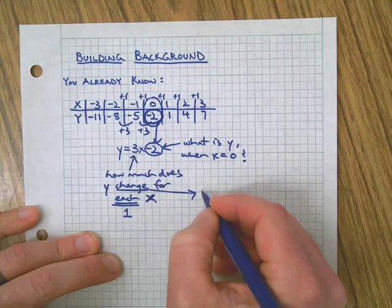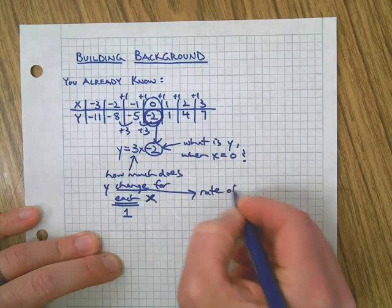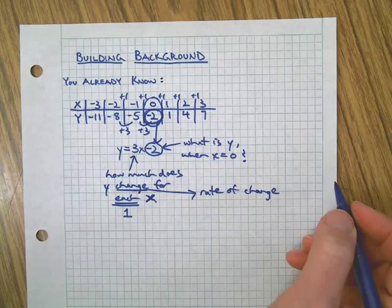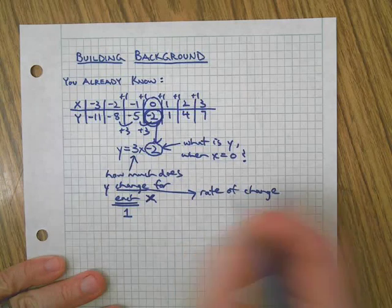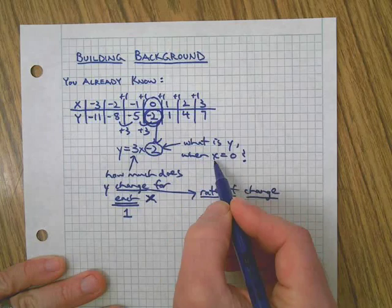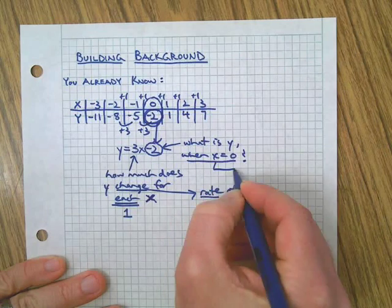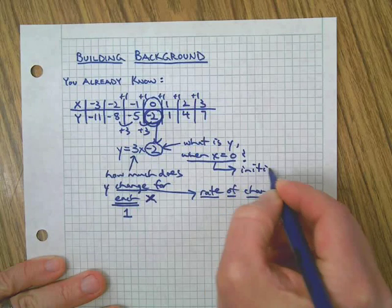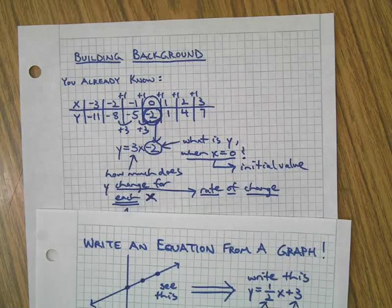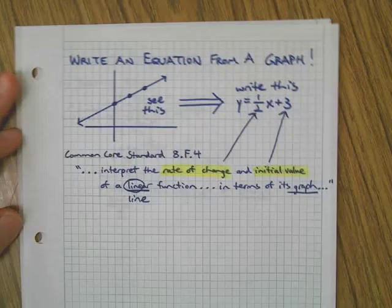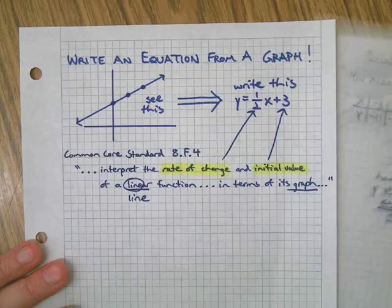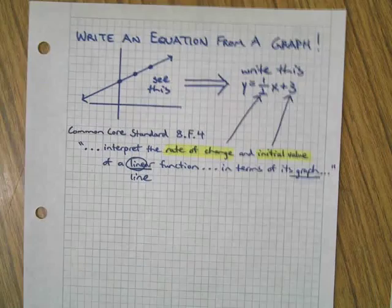We're going to start thinking of that as rate of change. And you could refer back to unit rates and other things we've done in class or in your life, rate of change. And then over here, what is y when x equals zero? We're going to start calling that initial value. And the reason why is simply the standard here. That's the language of the standard. So we want to make sure that you're aware of what you're learning and why you're learning it.